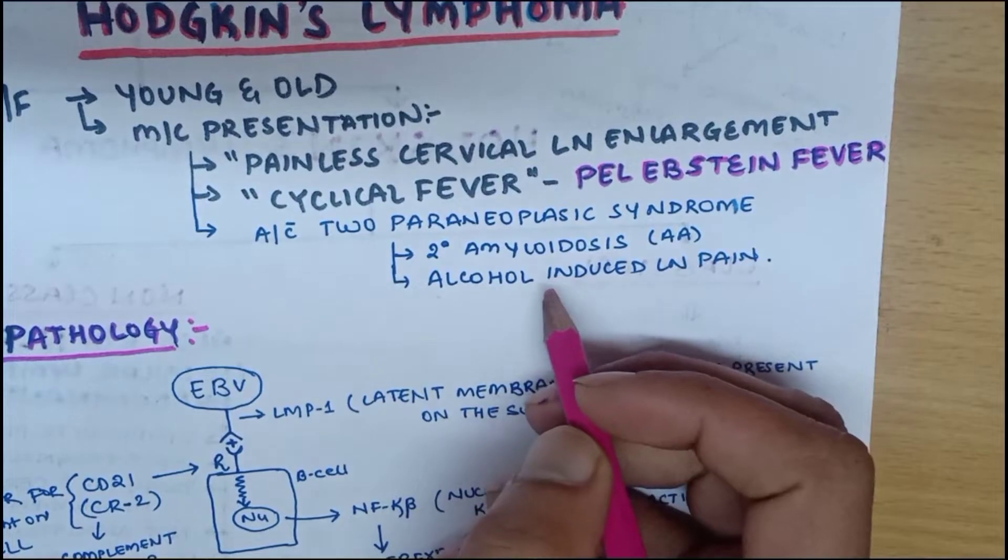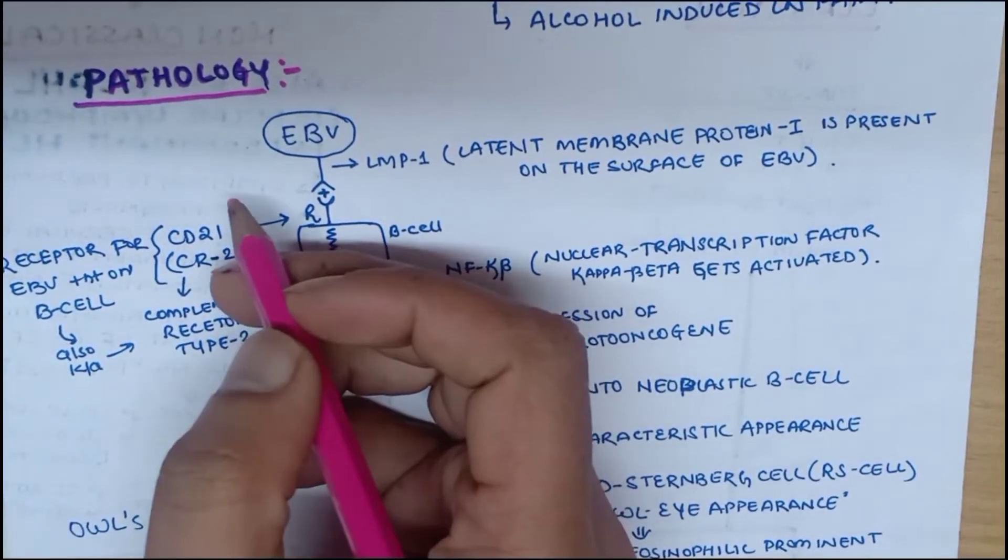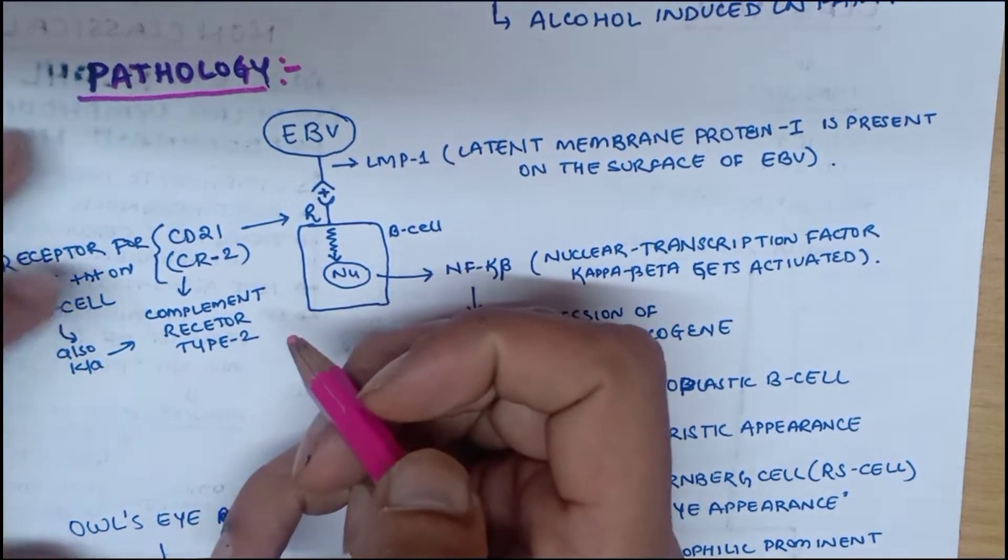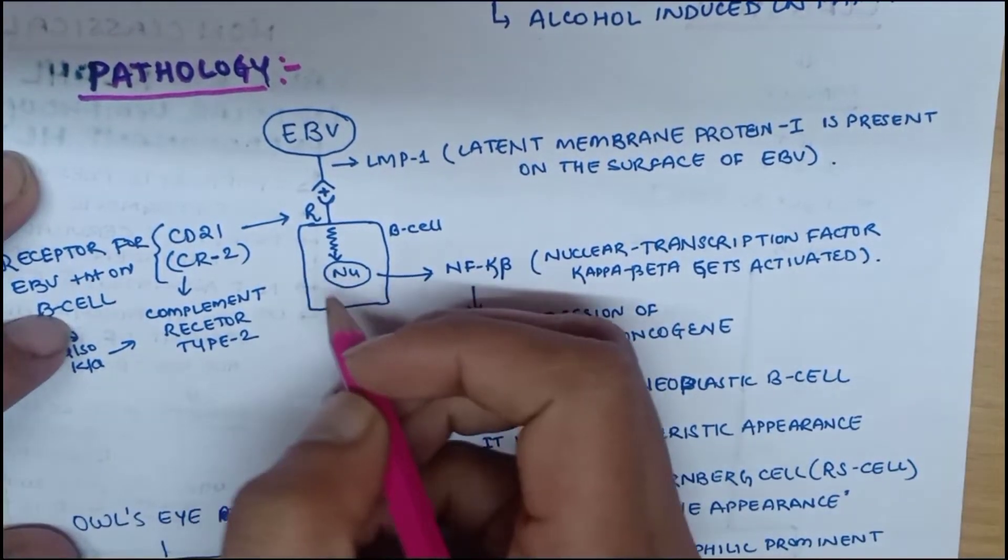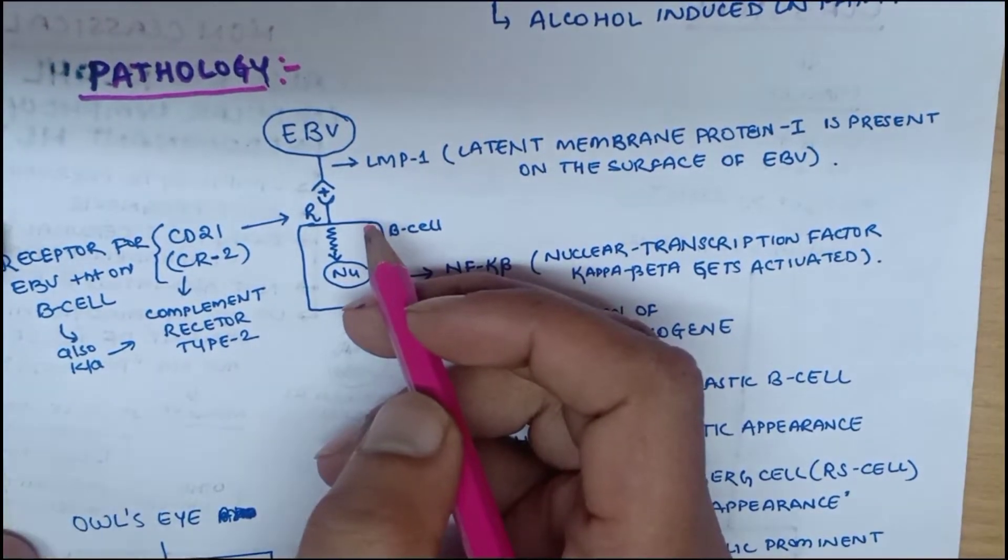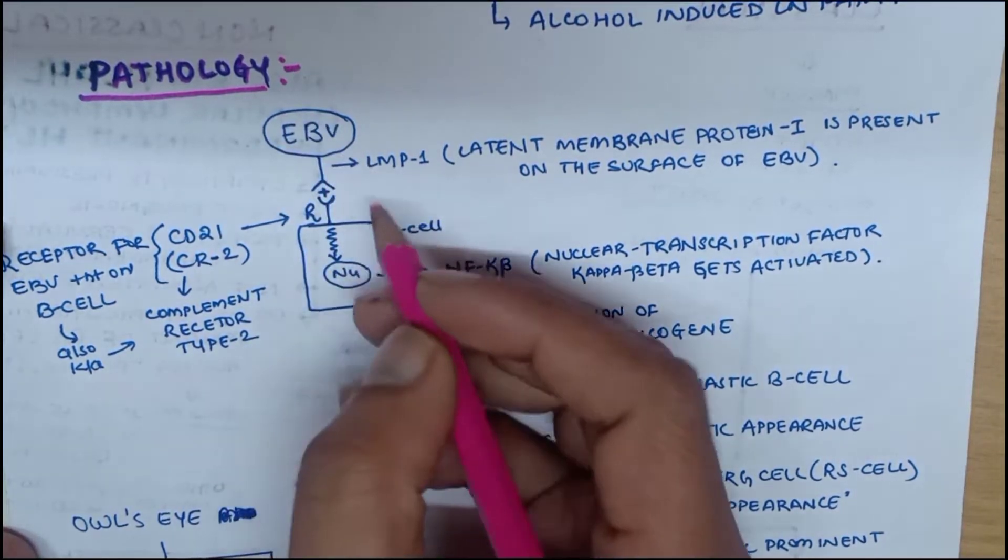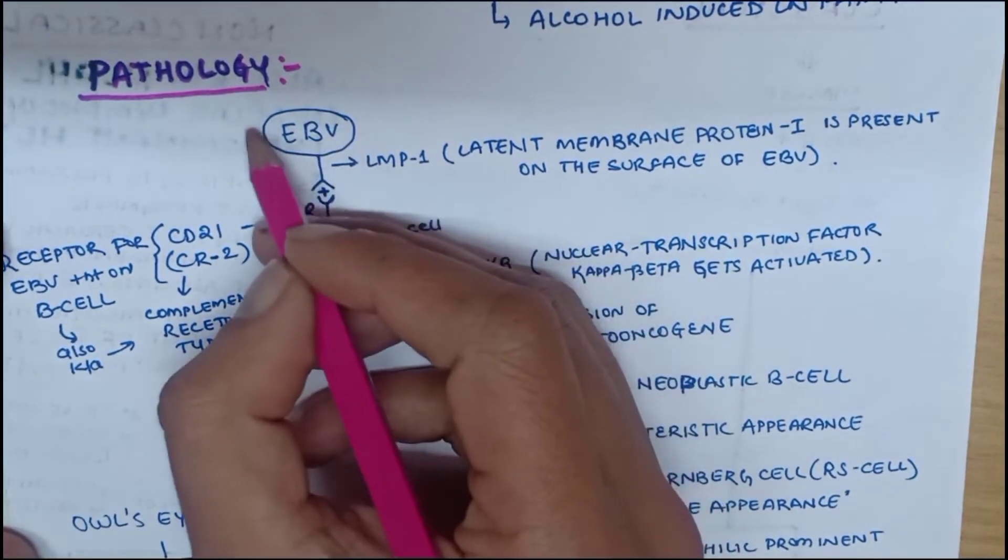Now coming to the pathology to see how a normal B cell gets converted into a neoplastic cell. Hodgkin's lymphoma is associated with Epstein-Barr virus infection.